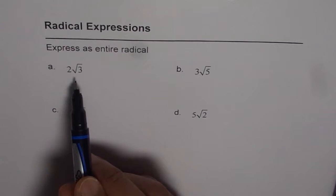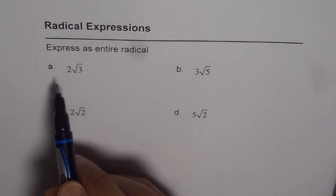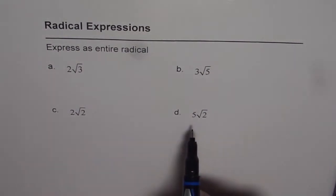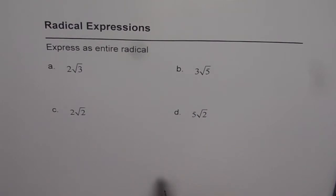2 square root of 3, we have to write this as one radical. Similarly we have 3 square root of 5, 2 square root of 2, and 5 square root of 2. I will do two of them for you. You learn the technique and apply it on the other two. I hope you appreciate that.